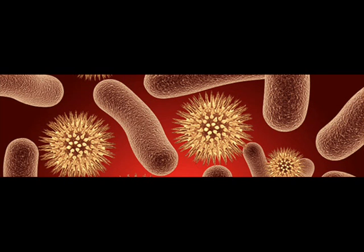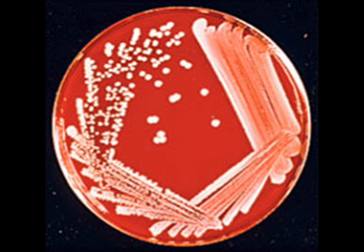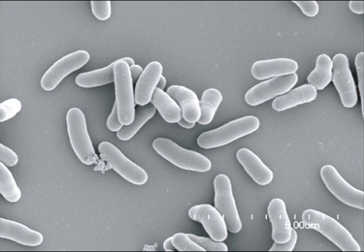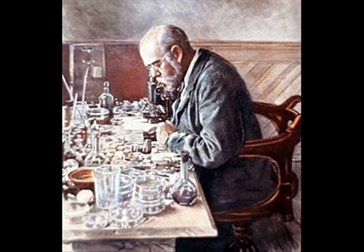A Nobel laureate, Koch became one of the founders of bacteriology, and he developed his postulates to help support the germ theory of disease. Koch's postulates are: the microorganism must be found in abundance in all organisms suffering from the disease, but should not be found in healthy organisms; the microorganism must be isolated from a diseased organism and grown in a pure culture; the cultured microorganism should cause disease when introduced into a healthy organism; and the microorganism must be re-isolated from the inoculated diseased experimental host and identified as being identical to the original specific causative agent. These four postulates helped contribute to the formulation of the germ theory.